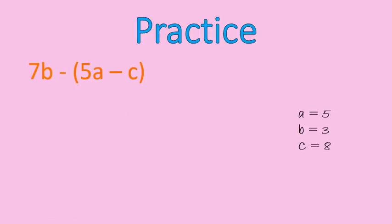I have a practice question for you. I've changed one thing about this expression. I've inserted one subtraction symbol. So, it's 7b minus the quantity of 5a minus c. The variables are the same. The expression is mainly the same. I want you to go ahead and give this one a shot. You should pause the recording and do this one on your own. The first step for solving this is to substitute the values in. b equals 3, a equals 5, and c equals 8. When we substitute those values in, this is what we get.